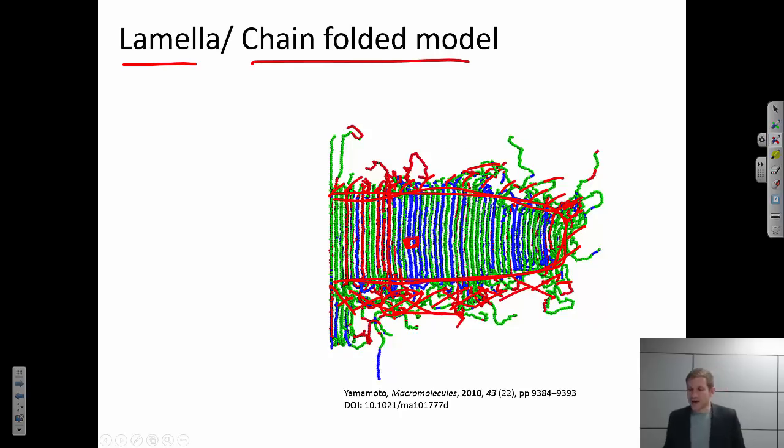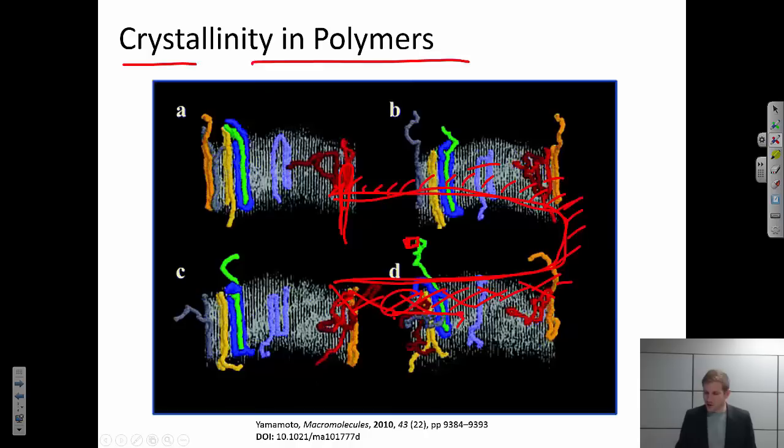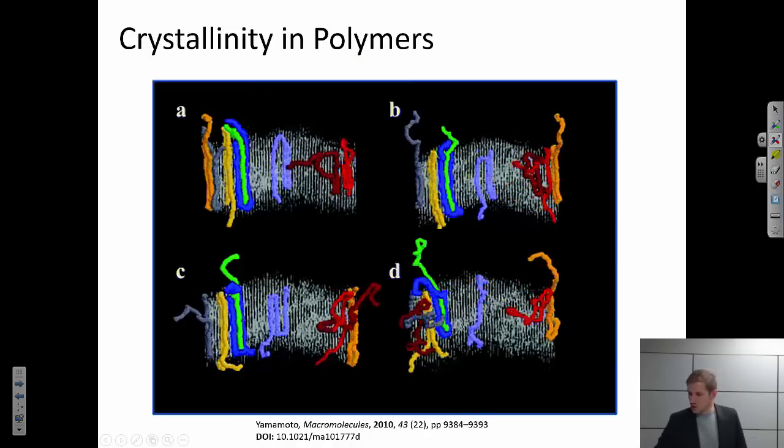We oftentimes also talk about a chain-folded model. What that means is that each of these chains that I see is not its own unique polymer. I can see cases where one polymer chain comes up, loops down, and so its neighboring chain is actually itself that's folded back over.